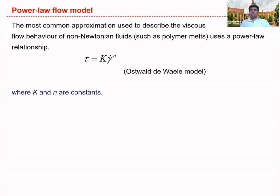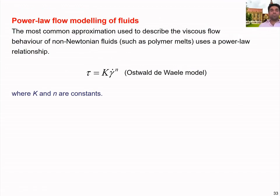The power law model is not a universal model, but it can be used to describe the behaviour of most non-Newtonian fluids with minimum possible errors. This model can also be used to define Newtonian behaviour: when you substitute n equals 1, k simply becomes the viscosity, recovering Newton's law of viscosity. Any fluid with constant viscosity, regardless of shear rate, can be modelled using Newton's law of viscosity.